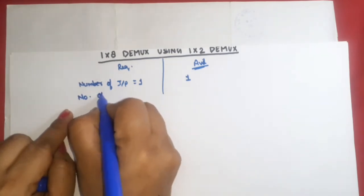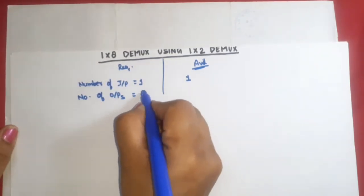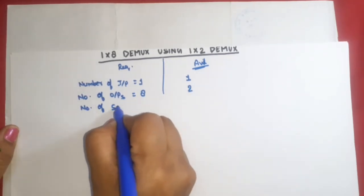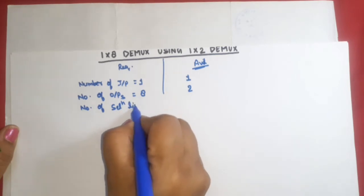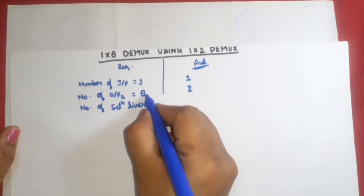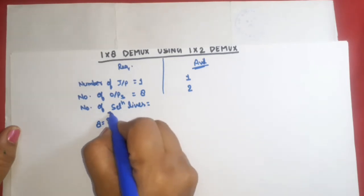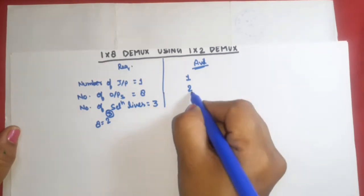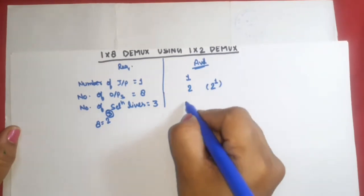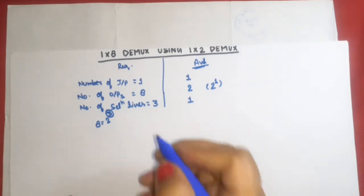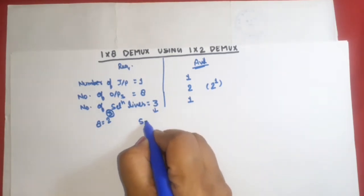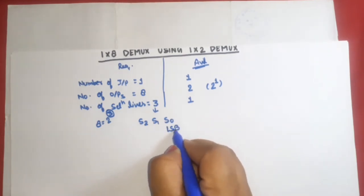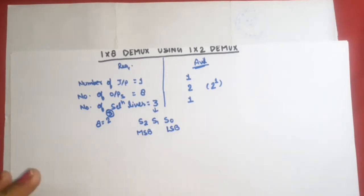The number of outputs for 1-to-8 is 8, and for 1-to-2 is 2. Now for the number of selection lines: 8 can be written as 2 raised to power 3, so 3 is the number of selection lines in this case. And 2 can be written as 2 raised to power 1, meaning 1 selection line. We name the 3 selection lines S2, S1, S0 — S0 is LSB and S2 is MSB.